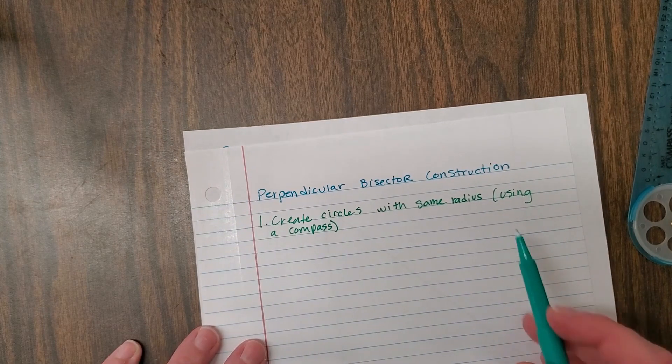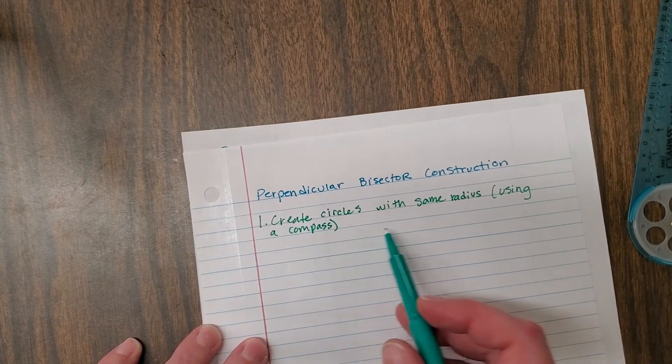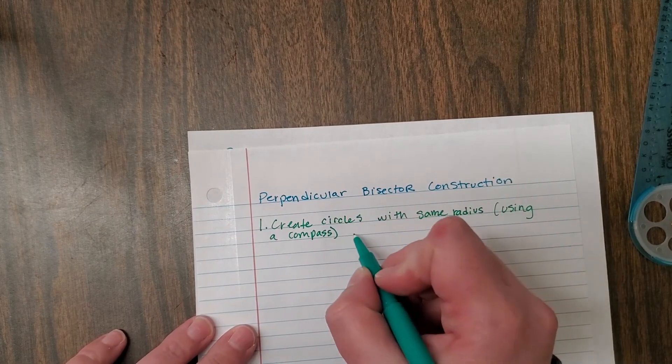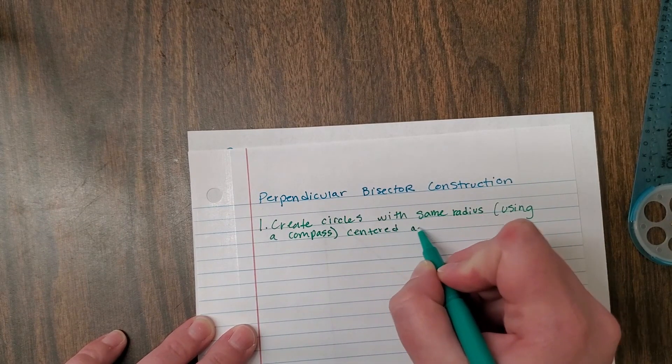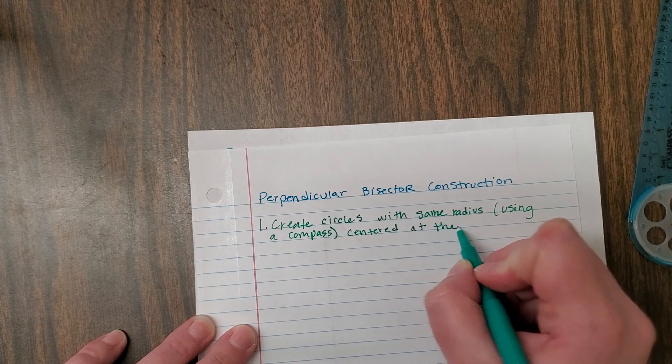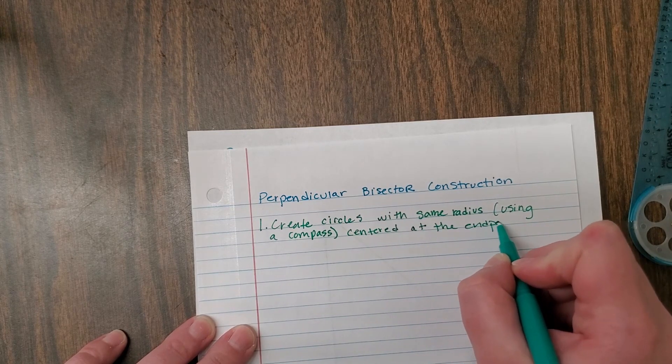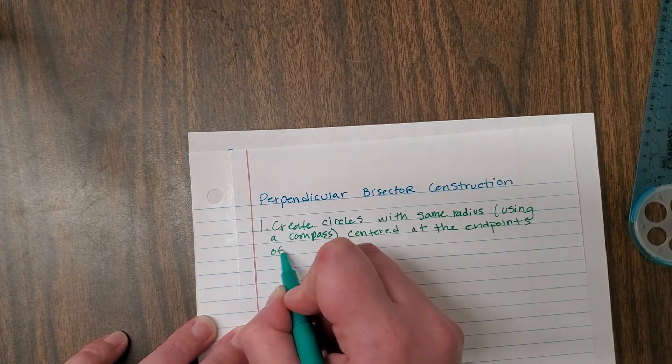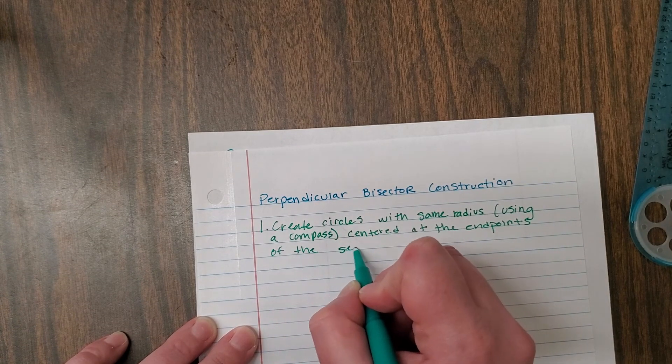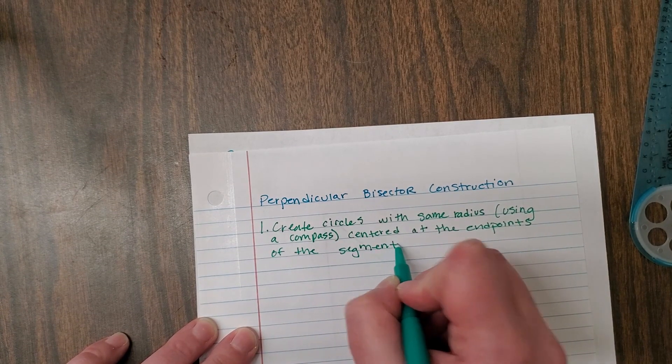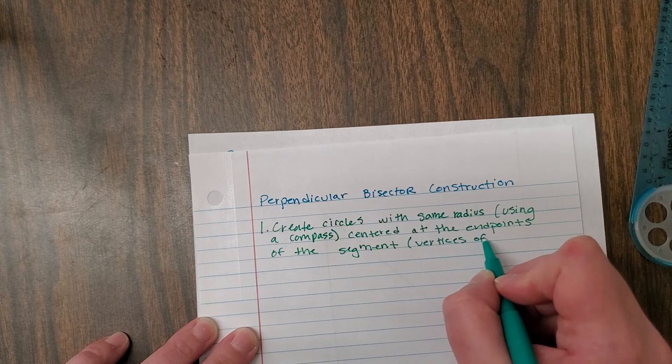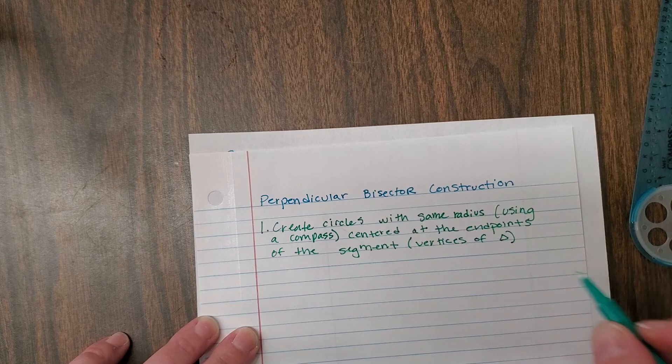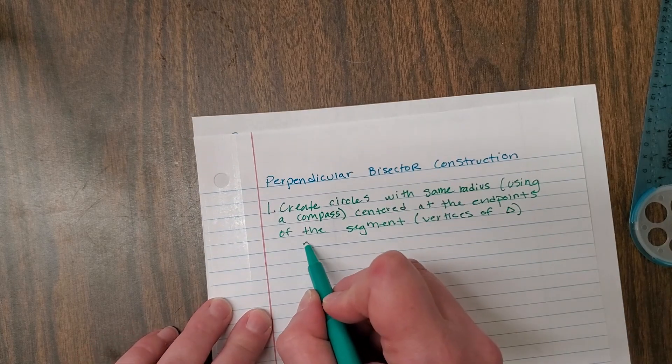So we're gonna use a compass to create circles of the same radius centered at the endpoints of the segment. And of course those could be, in this case, the vertices of the triangle. All right, just a note about that.